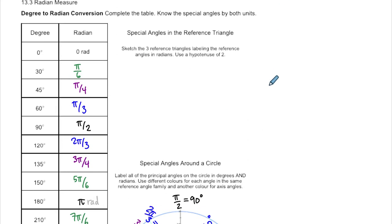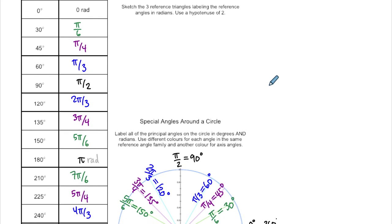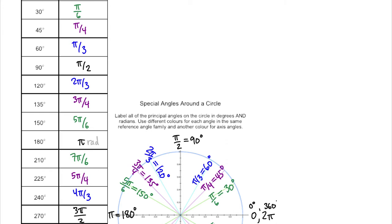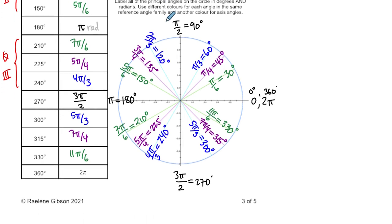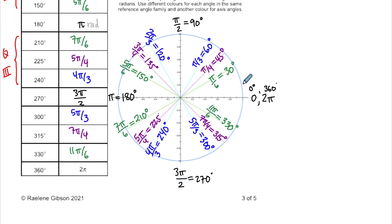I've color-coded the angles and labeled them on a circle: 0 radians at 0 degrees, π/2 at 90 degrees, π at 180 degrees, 3π/2 at 270 degrees, and 2π back at 360 degrees. The table is organized by quadrants: quadrant 1 has 30, 45, and 60 degrees with their radian equivalents; then boundaries at 90 and 180 degrees; quadrant 2 angles follow; quadrant 3 is between π and 3π/2; and quadrant 4 between 3π/2 and 2π. Take screenshots and fill in the graphic organizer as needed.